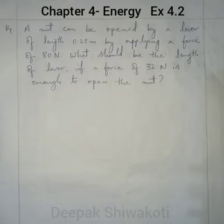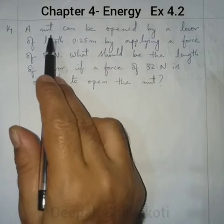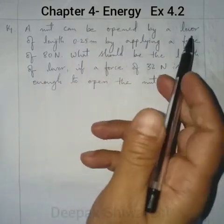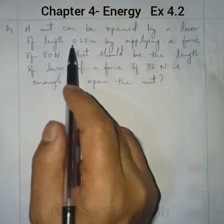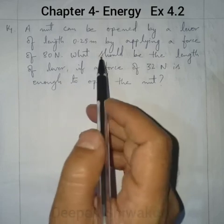Question number 14: A nut can be opened by a lever of length 0.25 metres. The effort arm is 0.25 metres and the effort is 80 Newtons. We have to find the load arm, which means the minimum force needed. We take the nut resistance as the load.